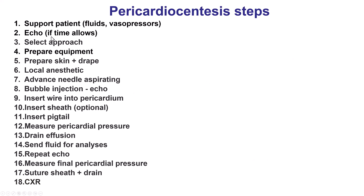To summarize, there are 18 steps for performing pericardiocentesis. Having a systematic, step-by-step approach and meticulously executing each step can optimize both the safety and the success of pericardiocentesis. Thank you.